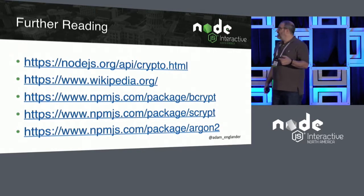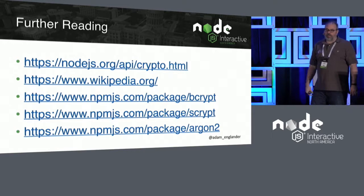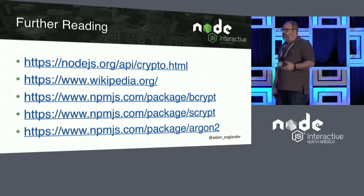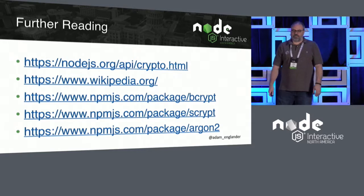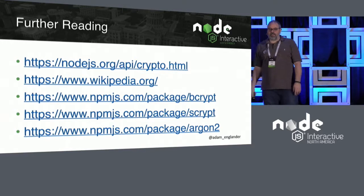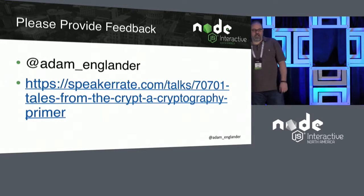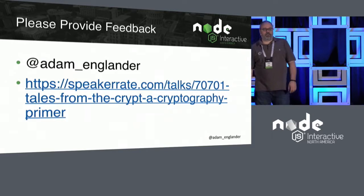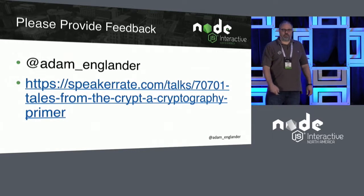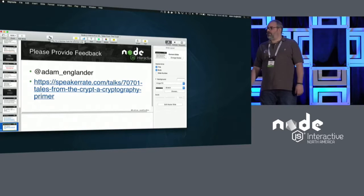For further reading, there is a lot of information on the Node.js crypto library — go to the very bottom for the things not to do, I would suggest. Wikipedia is where you get most of this information. And there are packages for Bcrypt, Scrypt, and Argon. Please provide feedback — speaker rates would be super awesome. The slides are up there as well, and that's it. Any questions?